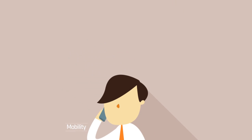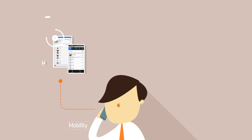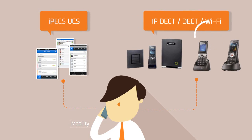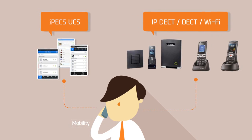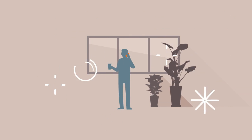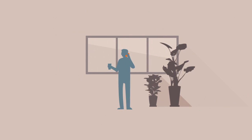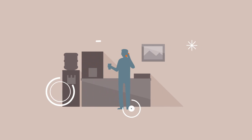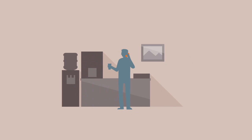The mobility solution provides faster and seamless communications through IPEX UCS, IPEX IPDECT, DECT, and Wi-Fi phones. Wherever a wireless user is, they can connect to the IPEX system through a base station or access point.